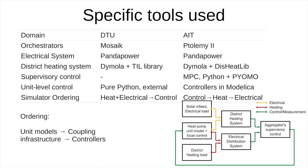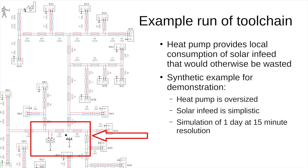One difference from the tool chain you just saw is that whereas AIT's approach has the controller first sending to the heating system then to the electrical system, we model the units first, then send signals to the coupling infrastructure, and then to the controller that sends back a setpoint. To demonstrate, we have a heat pump providing local consumption of solar in-feed that would otherwise be wasted. This is a synthetic example: the heat pump is oversized, the solar feed is simplistic, and we're simulating one day at 15-minute resolution.